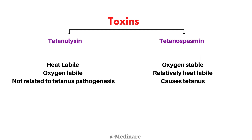Clostridium tetani produces two types of toxins: tetanolysin and tetanospasmin. Tetanolysin, as the name suggests, is responsible for causing hemolysis but has no role in causing tetanus. It is heat labile and oxygen labile. Tetanospasmin is the toxin responsible for causing tetanus; it is oxygen stable and relatively heat labile.